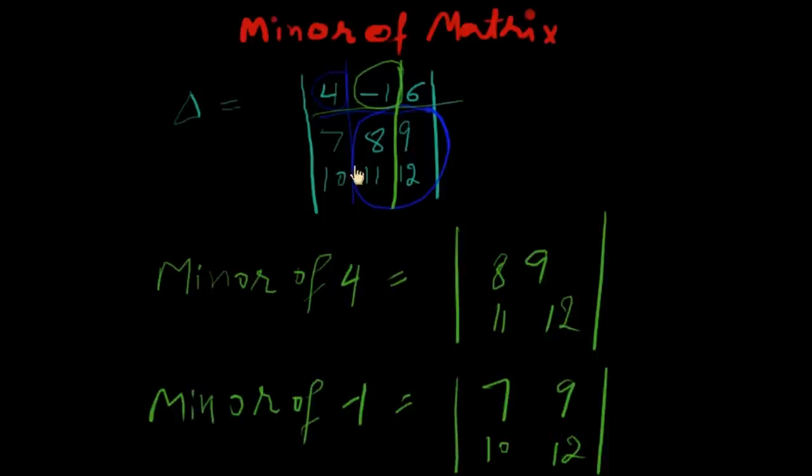Like this, we can calculate each element's minor by leaving its row and column. Thank you very much.